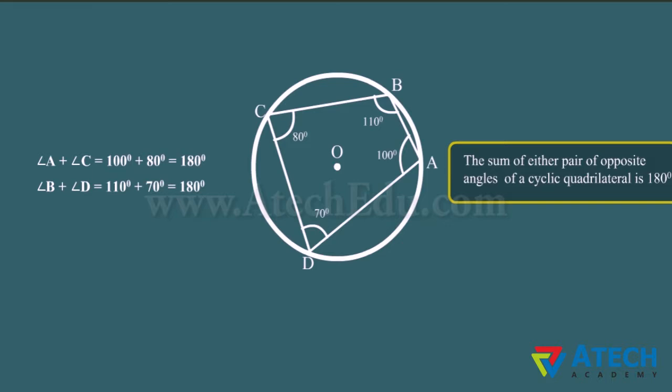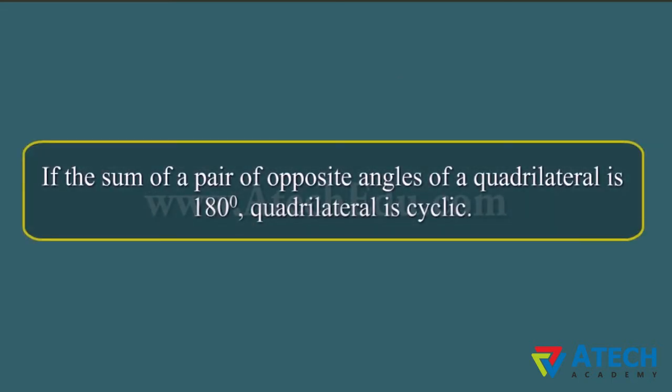The converse of the theorem is also true. It states that if the sum of a pair of opposite angles of a quadrilateral is 180 degrees, the quadrilateral is cyclic.